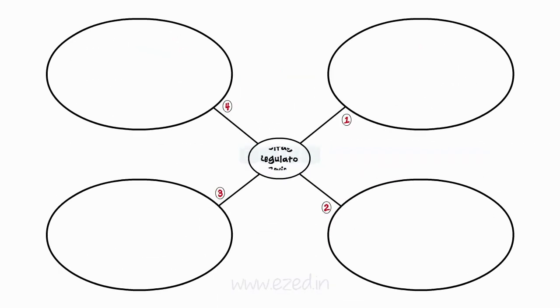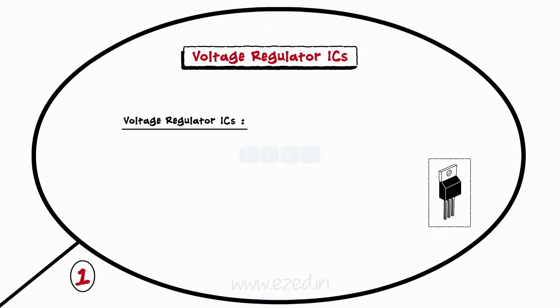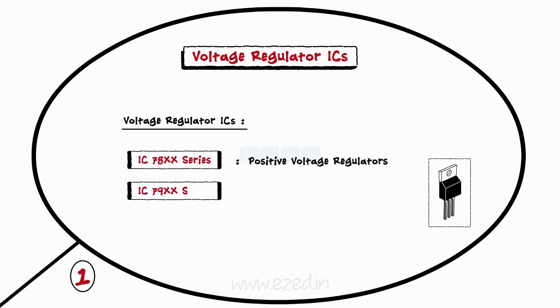Let's take a quick review of what we have studied in this lecture. ICs used for voltage regulations are called as regulator ICs. We studied three types of regulator ICs such as IC78xx series, IC79xx series and LM317.